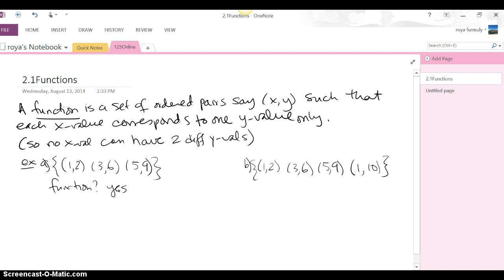The answer is yes, because each x only has one y value associated with it. Whereas if we look at part B, we have the first three ordered pairs identical to part A, and then we have that last guy, the ordered pair (1, 10), that throws things off. Because if you look at it, we have 1 associated with 2, and then again 1 down here is associated with 10. And this is a big no, no. One x cannot have two different y values. So is this a function? The answer is no.